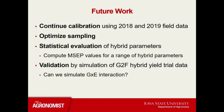In the future, we plan to continue our calibrations using 2018 and 2019 data to improve these calibrations, optimize our sampling procedures, perform statistical evaluation by computing mean square error prediction values for a subset of these hybrid parameters, and lastly do validation testing by taking these calibrated models and seeing if we can simulate the grain yield data observed in the Genomes to Fields environments. This will essentially allow us to ask: can we simulate genotype by environment interactions?